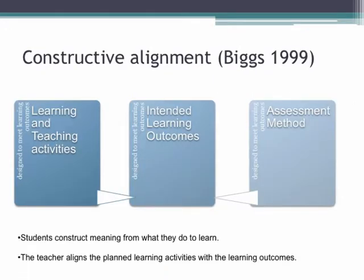To summarise this first section: Biggs introduced the notion of constructive alignment — aligning our learning outcomes with our teaching activities and assessment activities so they all serve the same purpose. Learning and teaching activities are designed to meet the learning outcomes; assessments are designed to meet the learning outcomes. Students construct meaning from what they learn, so we need to align all these elements together to create something achievable for students. It's worth looking at this concept in Biggs's book.